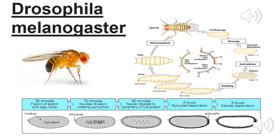The ideal system used to study anterior-posterior patterning is Drosophila melanogaster, also known as the fruit fly. Beginning with work done by Thomas Hunt Morgan, Drosophila are used for various fields of study because of their small size, rapid growth rate, and their ability to be easily manipulated. With their development lasting 9 days, a haploid female egg is fertilized by a haploid sperm, forming a diploid zygotic nucleus.